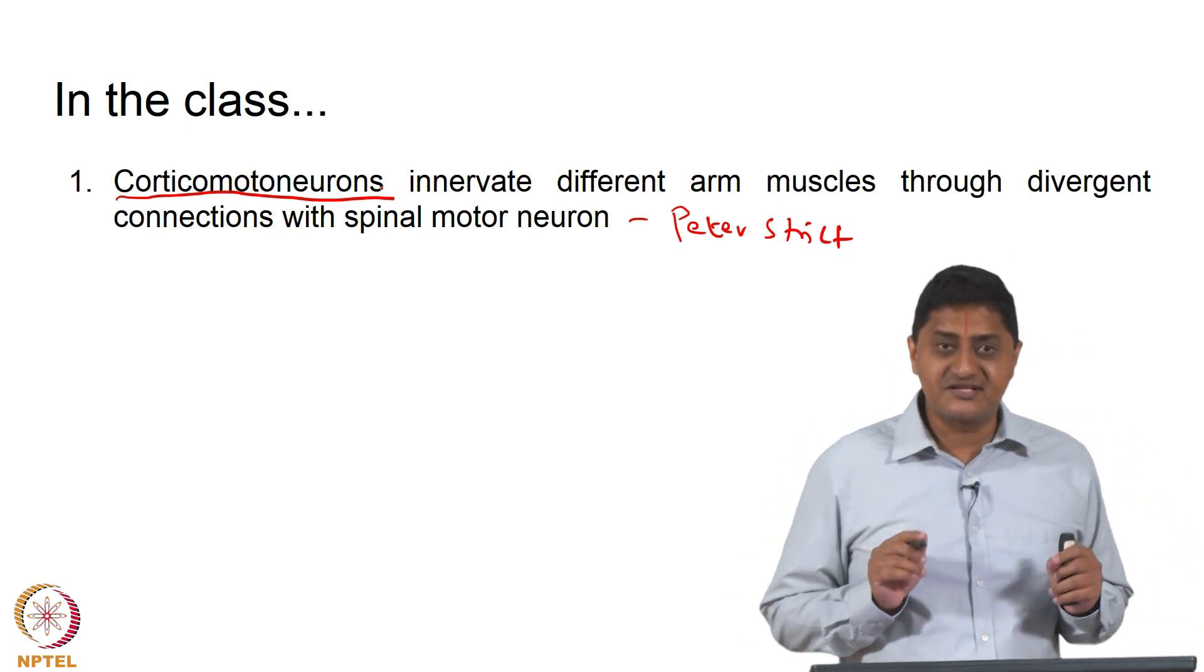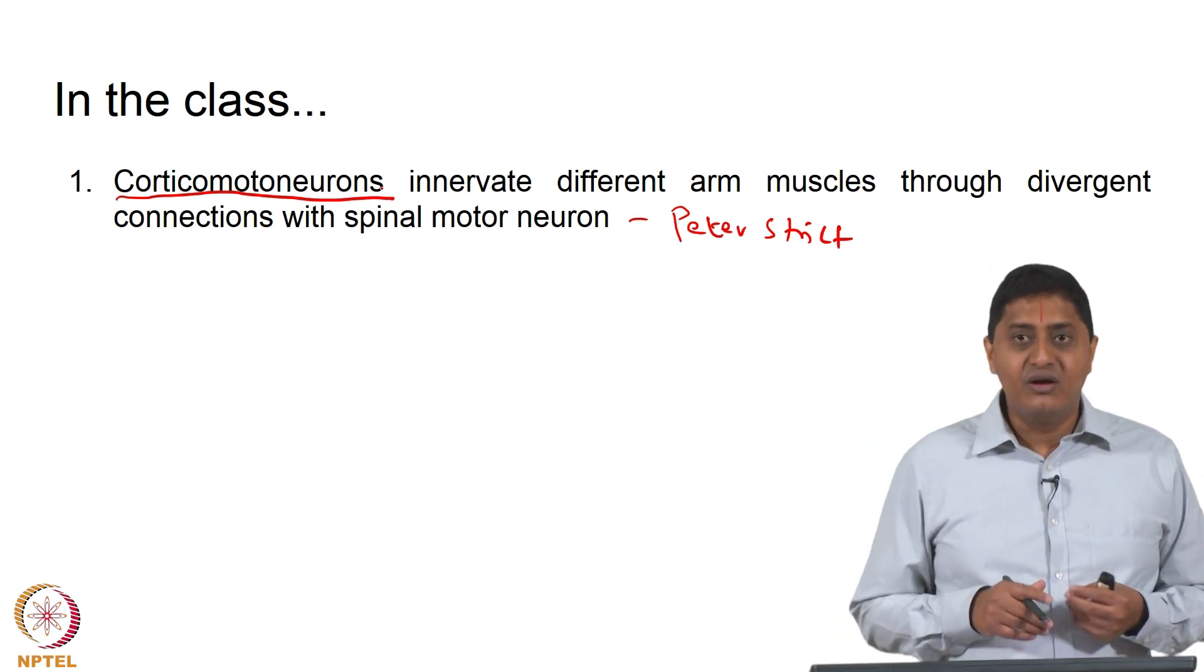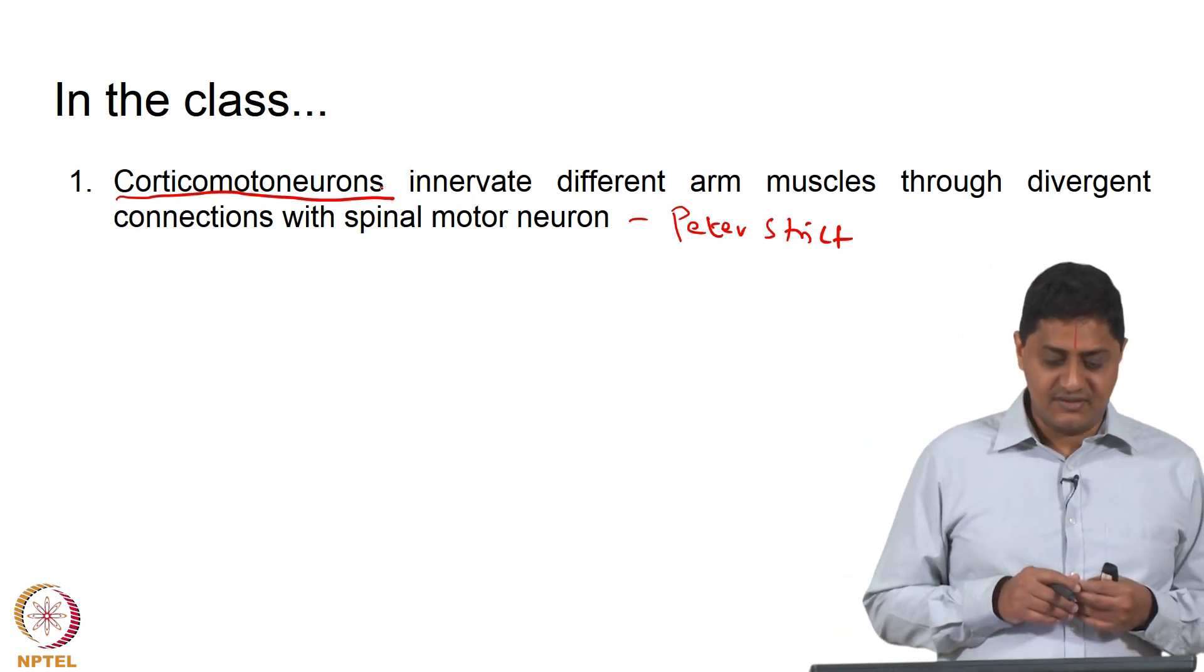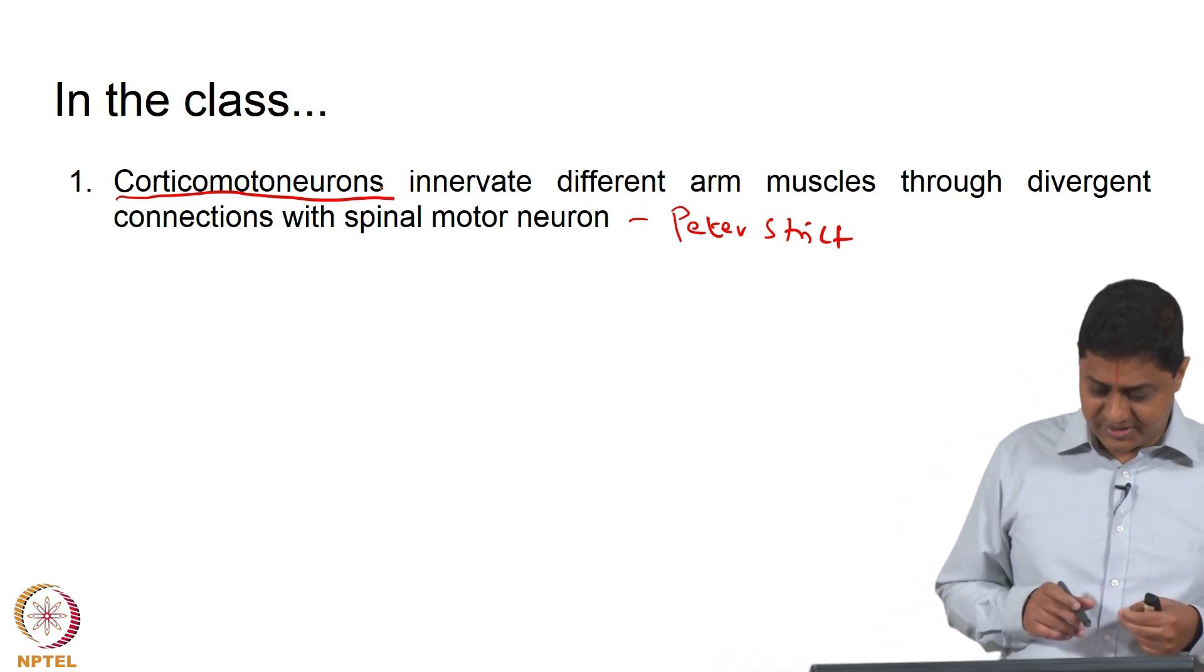First, let us discuss what are corticomotor neurons. Those that have monosynaptic projections with spinal motor neurons are called corticomotor neurons.